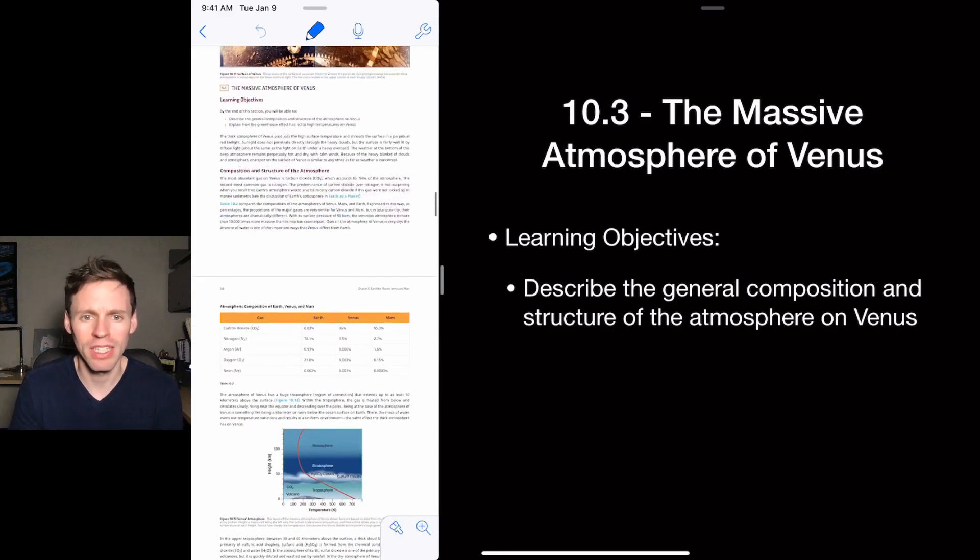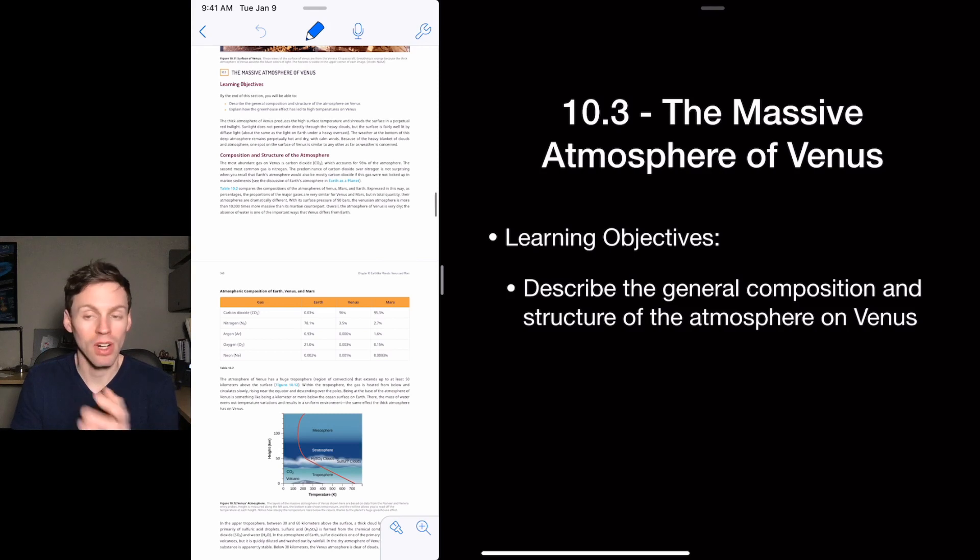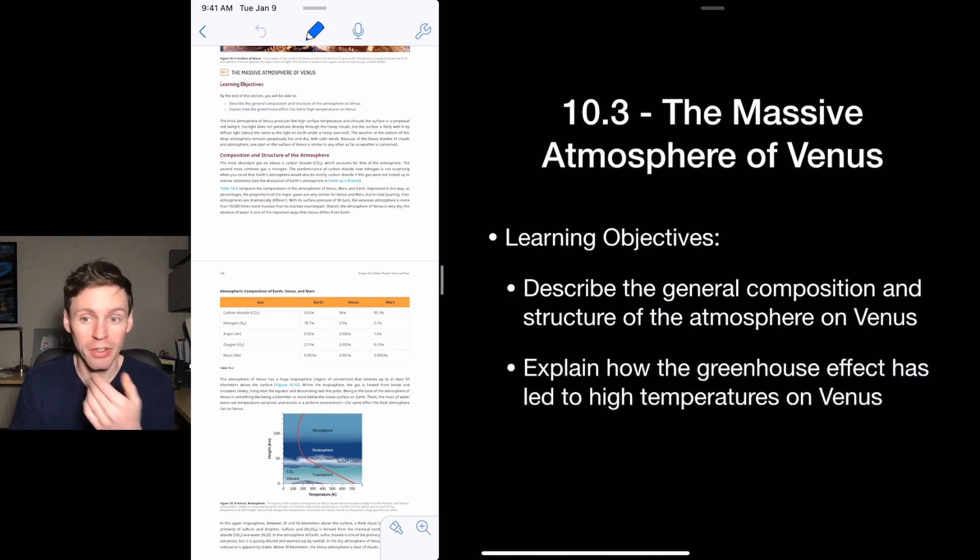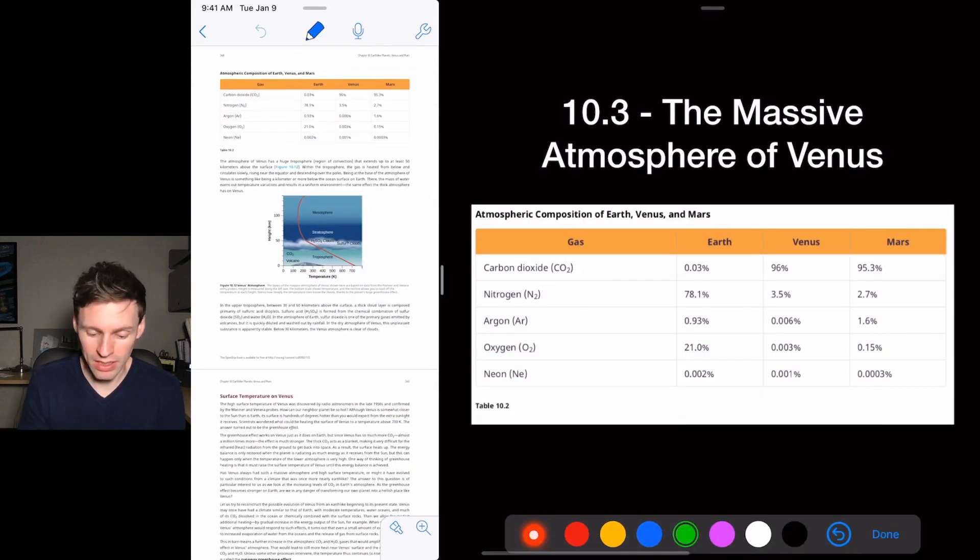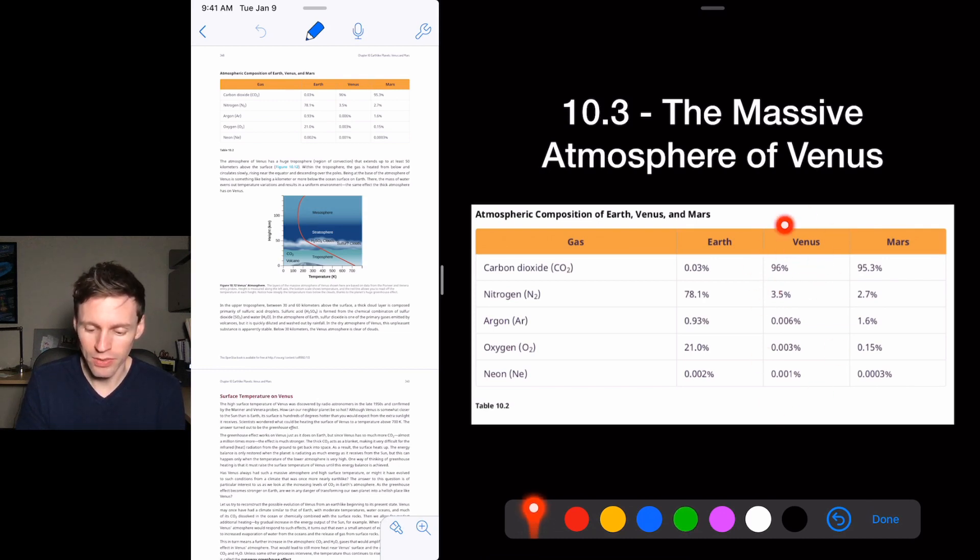So the atmosphere of Venus is ridiculously thick. We want to describe the composition of it and the structure, explain the greenhouse effect and how it's led to high temperatures on Venus. The atmosphere of Venus is 96% carbon dioxide. So this is Venus here, 96% carbon dioxide. So it was Mars basically, but Mars' atmosphere is very thin. So even though they have the same basic compositions, Venus has a ton more atmosphere than Mars.